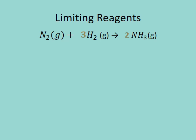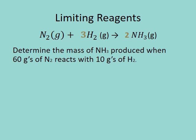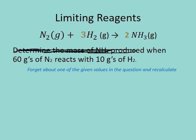We've got a balanced equation here. The question is, how much NH3 is produced when 60 grams of N2 reacts with 10 grams of H2? For the moment, I'm going to pretend that this part of the question doesn't even exist. I'm not going to deal with that NH3. What I want to do is forget about one of the given numbers in the question and actually recalculate.